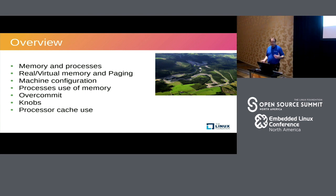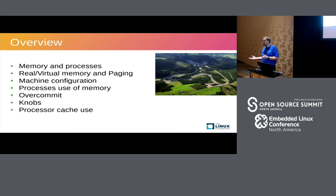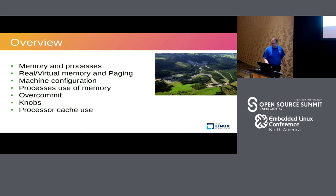I want to talk about memory processes, real versus virtual memory, the distinction and how paging works, how you can figure out what kind of memory is in your system, how you monitor how a process is using memory, how you can configure the system to seem to have more memory than there really is — that's over-commit — and give you an overview of where to find more information. If we have time, we can go into processor cache use and how to optimize performance of your code.